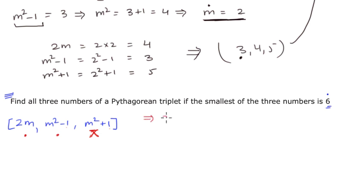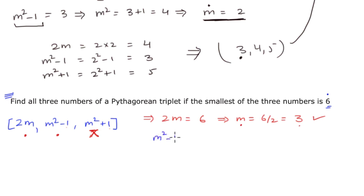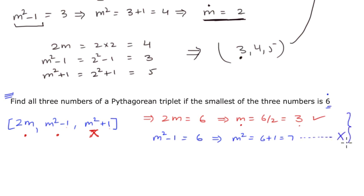Let's try 2m first: if 2m equals 6, then m equals 6 divided by 2, making m equal to 3. This works because we obtain m as a whole number. Let's also try the other method: m squared minus 1 equals 6 would mean m squared equals 7, but the square root of 7 is not a whole number, so this does not work. Since m squared minus 1 equals 6 does not work, we proceed with m equals 3.